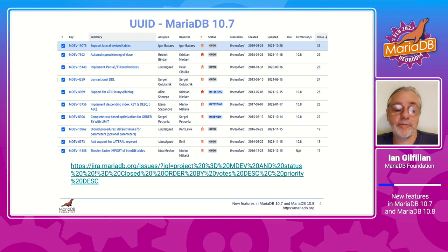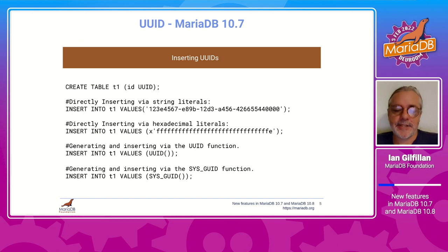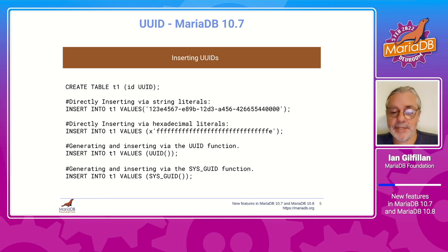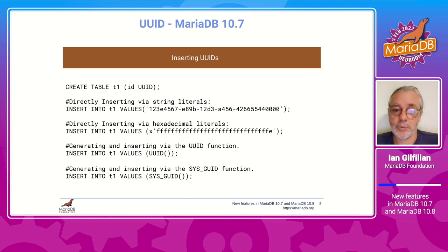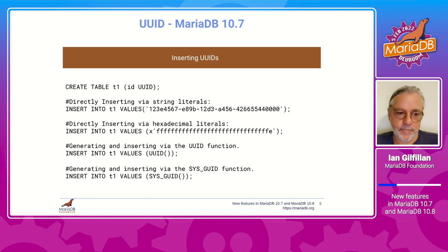UUID — universally unique identifier — is a 128-bit value that is unique for all practical purposes in a particular time and space. MariaDB has had a UUID function for a long time but hasn't had a native data type. If you wanted to store UUIDs you might have used BINARY(16), which required manually stripping dashes, or VARCHAR, which has performance implications. This has been a really strongly requested feature, and I'm very happy to introduce the UUID data type.